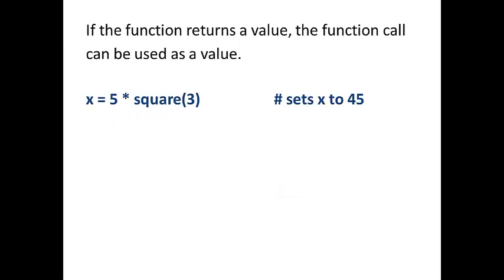Now if the function returns a value, the function call itself can be used as a value. So in this case, x equals 5 times square of 3. So square of 3 is like a 9. So this is like saying x equals 5 times 9. So it's going to assign 45 to variable x.